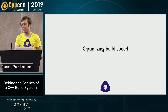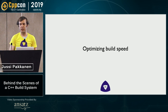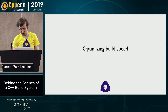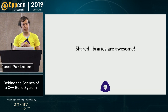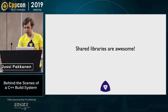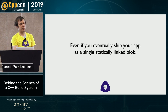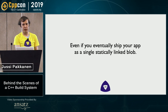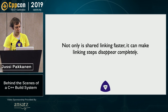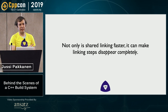Onward — I guess this is what most of you came here to see: how do you optimize build speeds? There's been surprisingly little research on how this should be done. But one of the main things you can do is use shared libraries, and shared libraries are totally awesome. Even if you eventually ship your application as a single statically linked blob, shared libraries are still totally awesome for the development cycle. Shared linking is faster than static linking because there's less work to do, and it can also make some linking steps completely disappear.